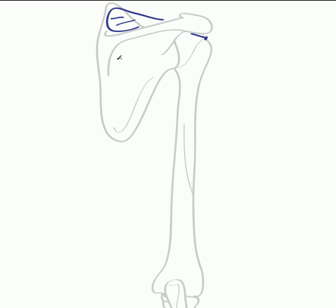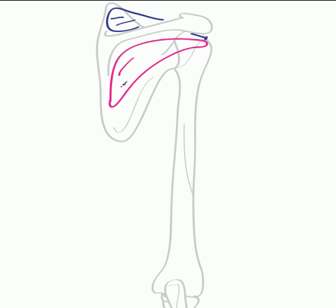Found inferior to the scapula spine we have infraspinatus. Infraspinatus also runs towards the greater tubercle of the humerus and it runs from the infraspinous fossa. Here we can draw infraspinatus running towards the greater tubercle assuming this kind of position. So here we have infraspinatus.